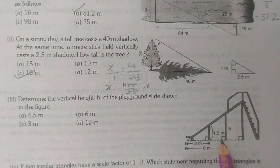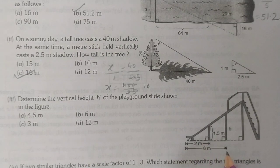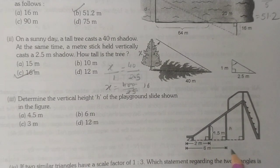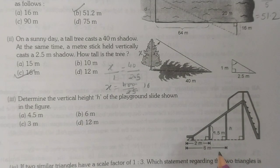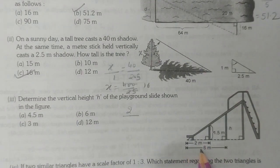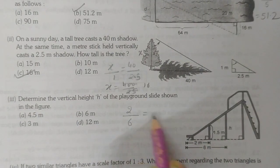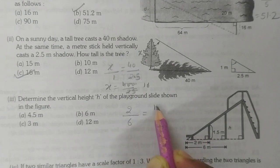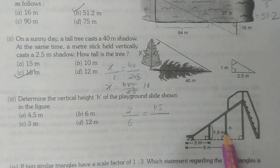This is 90 degrees, this is 90 degrees, and this angle is common. So by AA these two triangles are similar. By CPST, small side over big side equals small over big side. So 2 over 6 equals 1.5 over h.